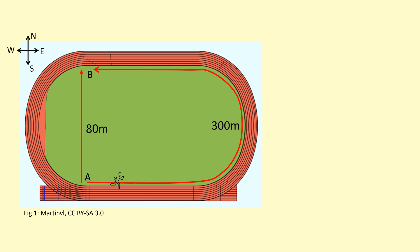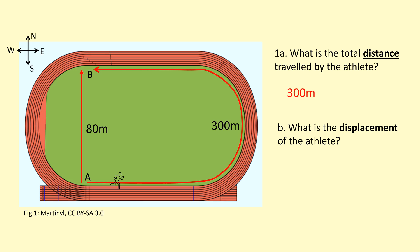In this diagram we've got a person running around a track and the question we've been asked here is what is the total distance traveled by the athlete and what is the displacement of the athlete? So hopefully you can see it's going from A to B and the total distance he's covering is 300 meters.